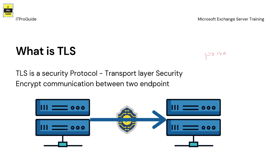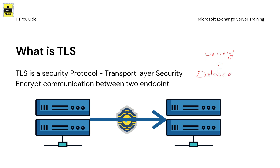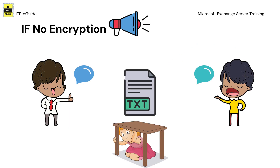TLS is a security protocol — Transport Layer Security — which provides privacy and data security for communication over the internet. A primary use case of TLS is to encrypt the communication between two endpoints. In an Exchange Server, as Exchange Server communicates with clients and also with different mail servers for sending and receiving emails, Exchange provides TLS that adds security to this communication.